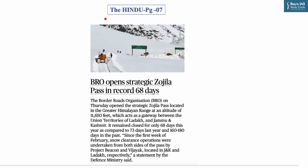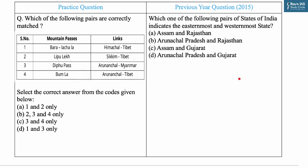The next question is inspired by news from page seven of The Hindu about the Border Roads Organisation opening the strategic Zojila Pass in a record 68 days — previously it was closed for around 73 days. UPSC has been asking questions based on important geographical features in the news, such as in 2015 when it asked which states form the easternmost and westernmost boundary of India. We've taken up a practice MCQ on important mountain passes in India.